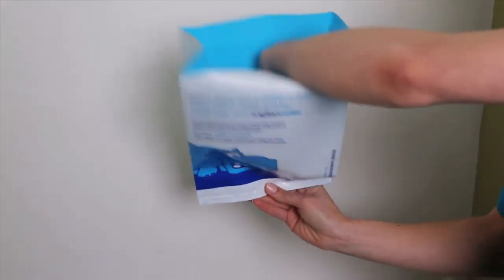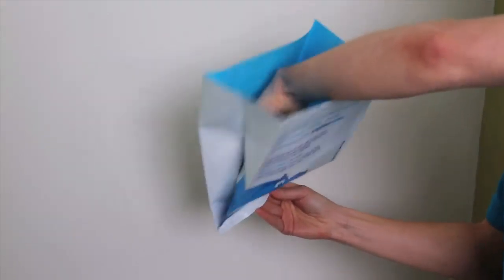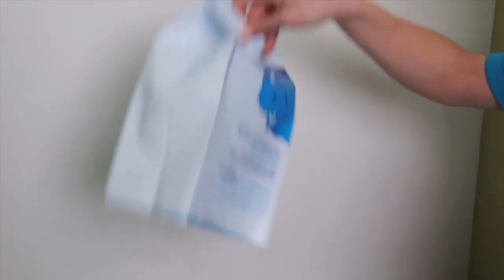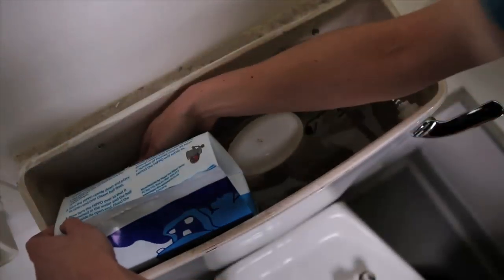First, put both hands inside the Hippo and push out the corners to create a box shape. Then, turn the Hippo upside down and place its open end over the cistern ball float.